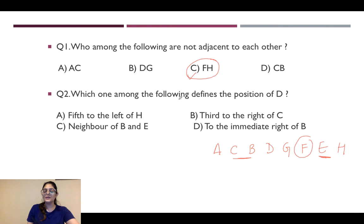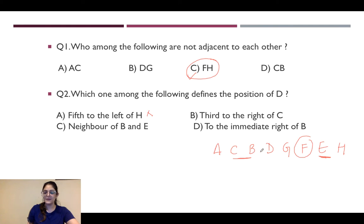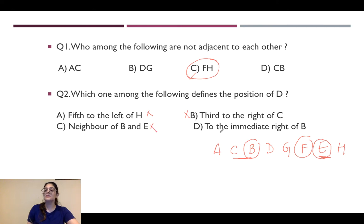The next question asks: which of the following defines the position of D? First option — fifth to the left of H: counting from H gives fourth to the left, so this is wrong. Second — B is third to the right of C: it's actually the second position, so also wrong. Third — neighbor of B and E: D is not a neighbor of both B and E, so wrong. The last option — D is to the immediate right of B: yes, that is correct. So the answer is the last option.